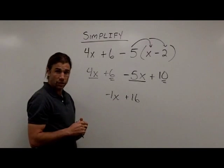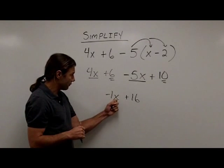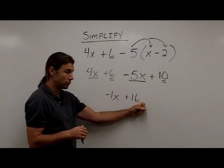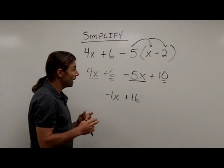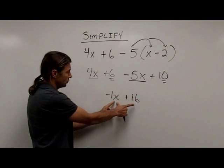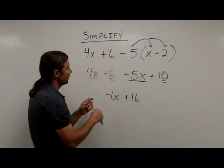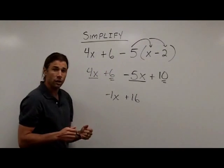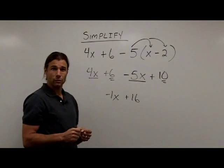This is as simple as that expression can get. Notice I have a variable term here, it has an x. Here I have a constant term, it doesn't have any variables at all. So this is the best I can do. However, that's quite a bit simpler than the problem that I started with. Two terms compared to three or four terms with some multiplication and such. So hopefully this will help you simplify algebraic expressions.